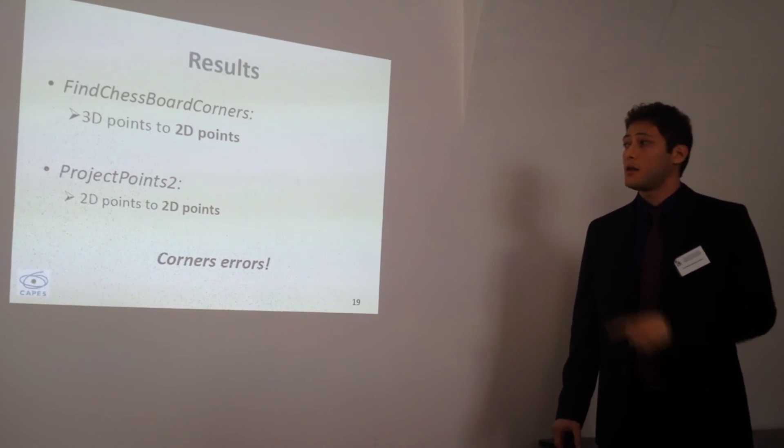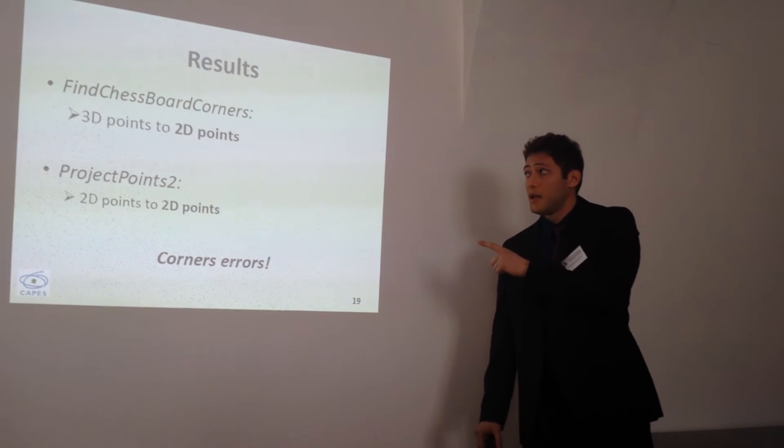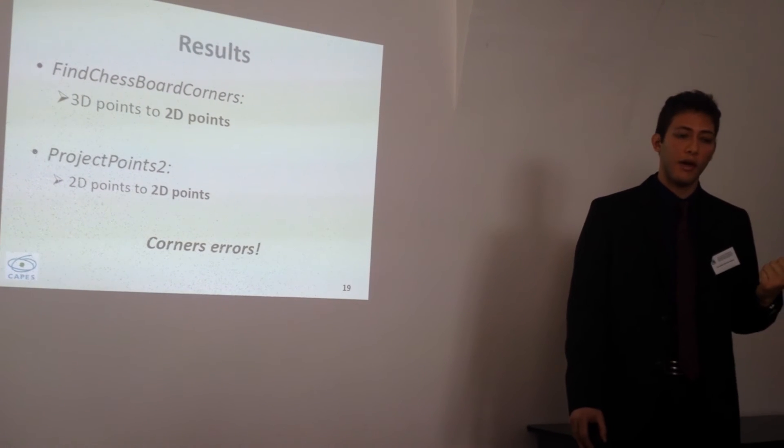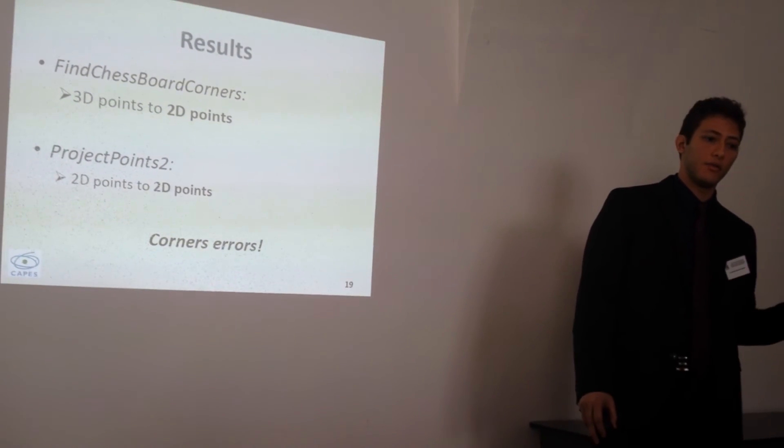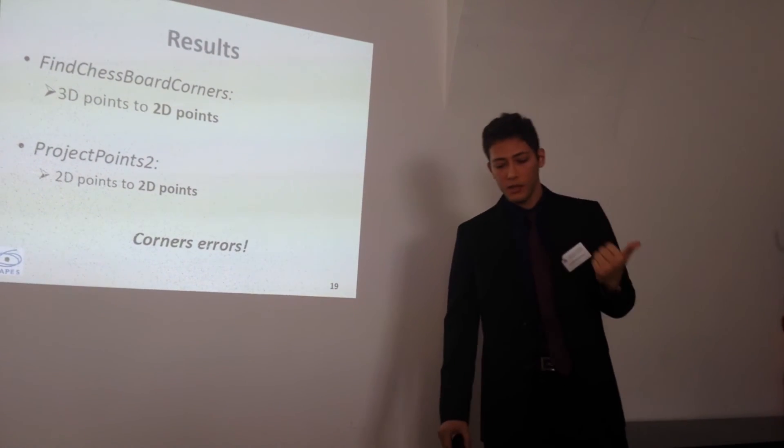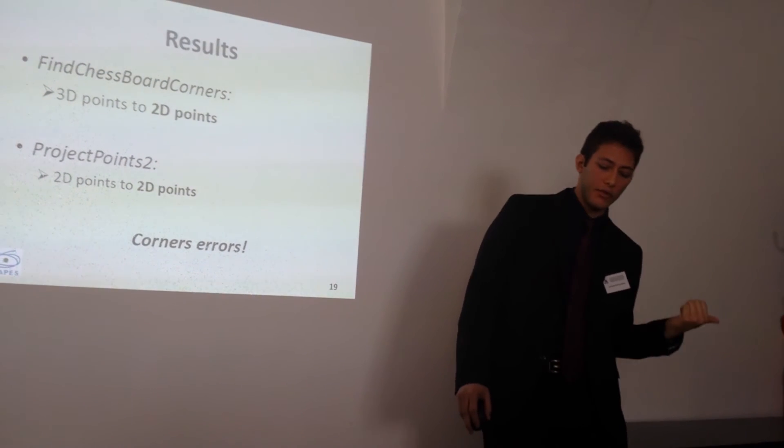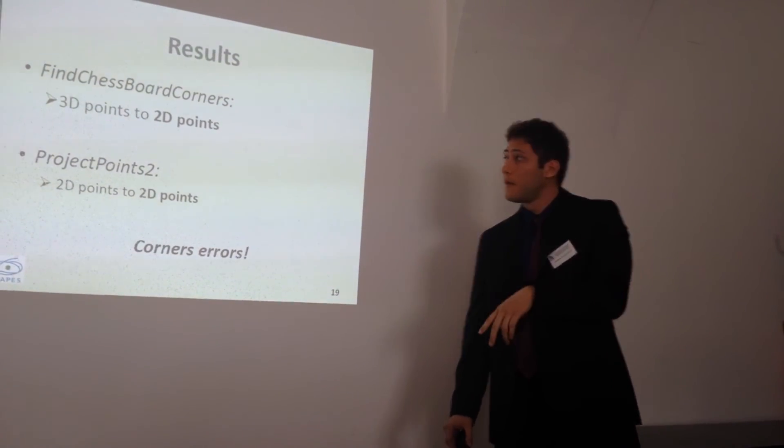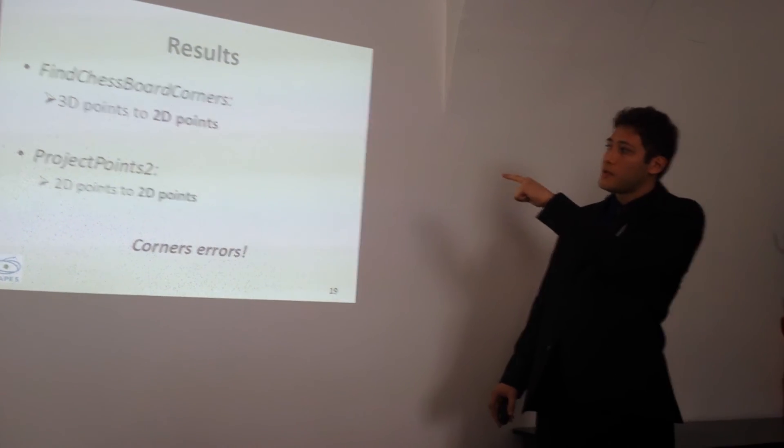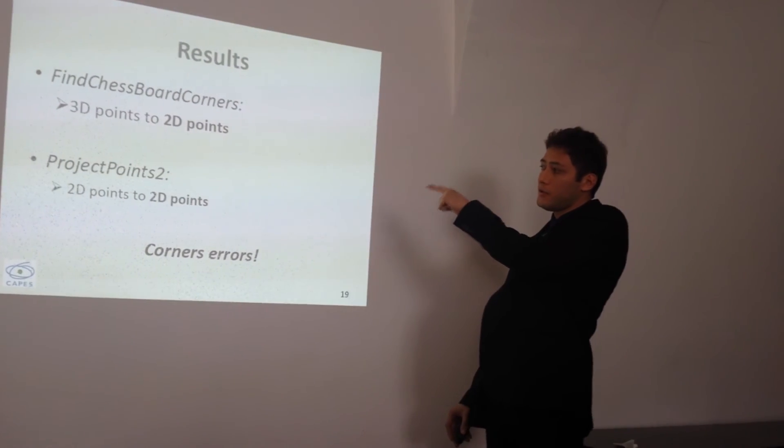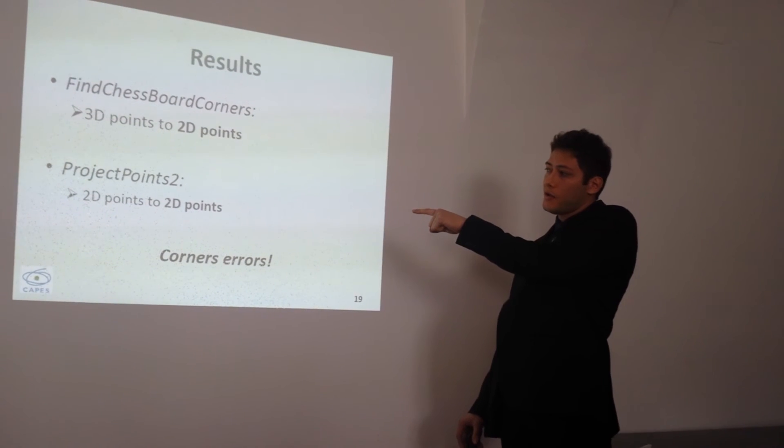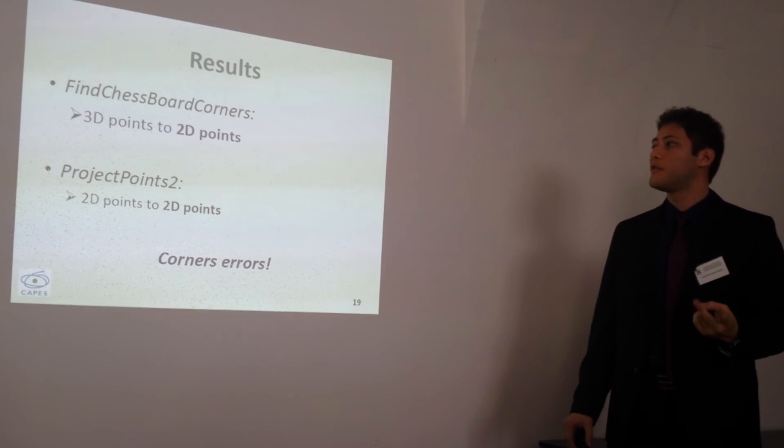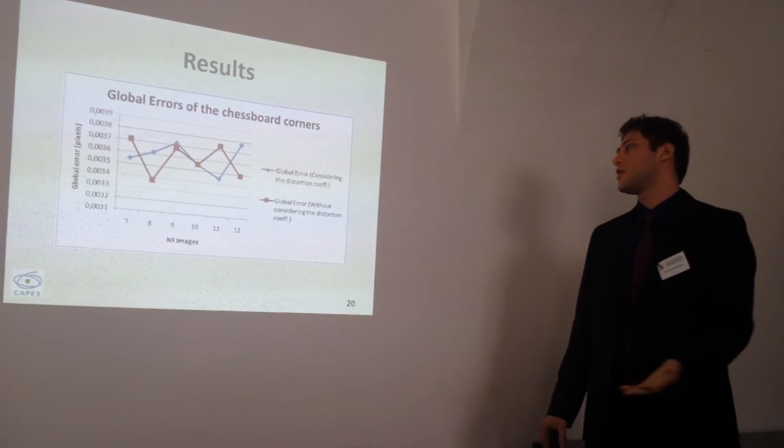Another nice point is when you make the calibration, you have the 2D points. You have the projection of 3D and you can make an error calculation. The function FindChessboardCorners gives you the 2D points, and the function ProjectPoints gives you the inverted. So you can calculate the error.